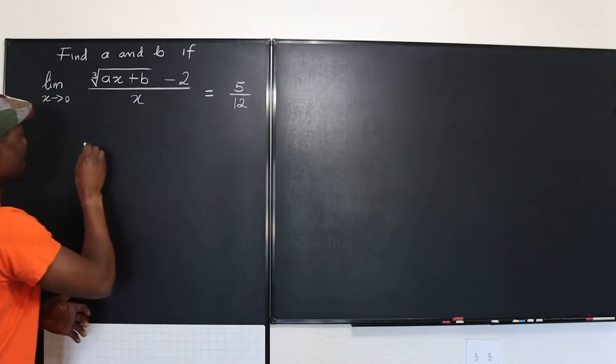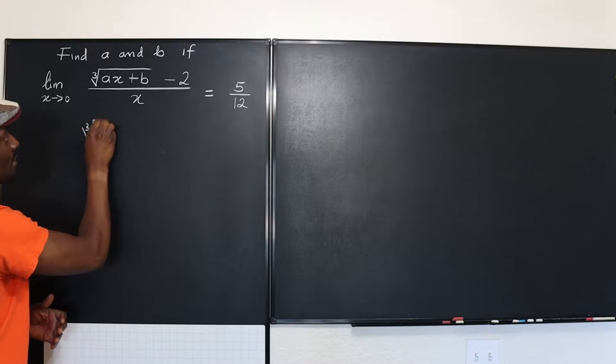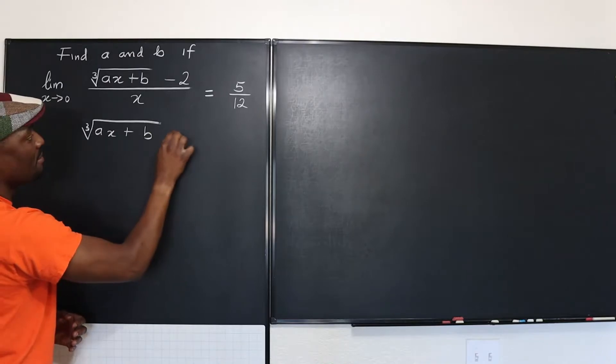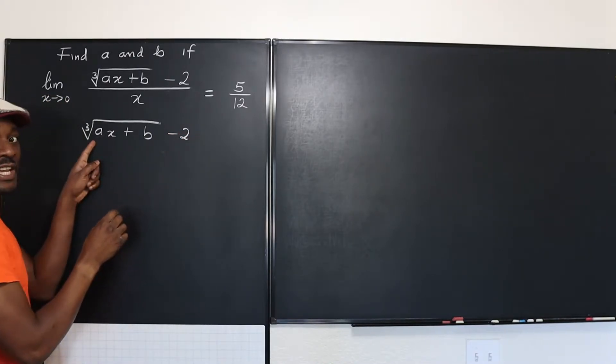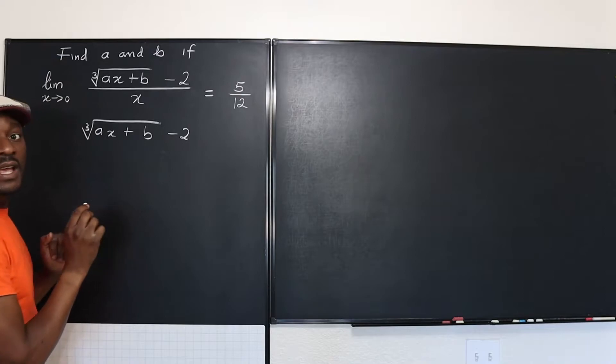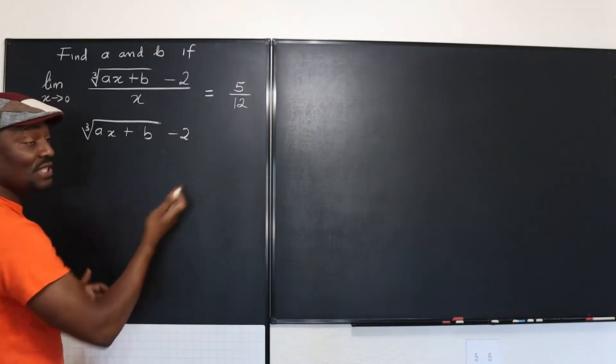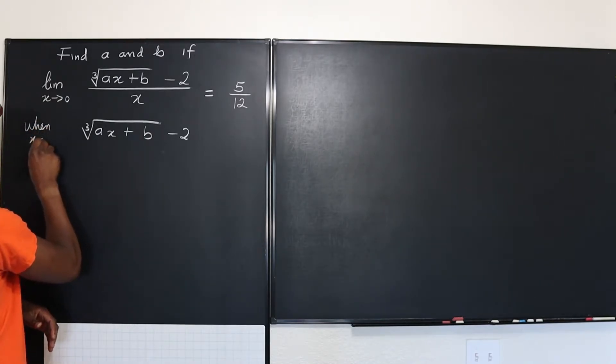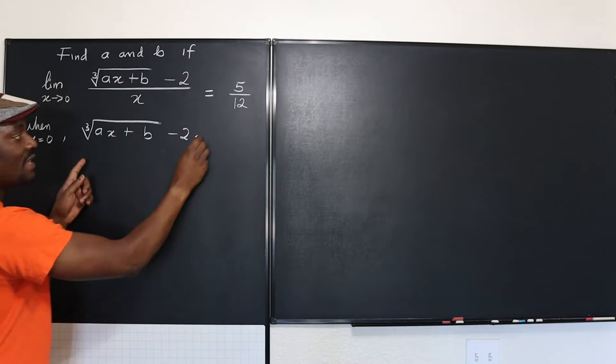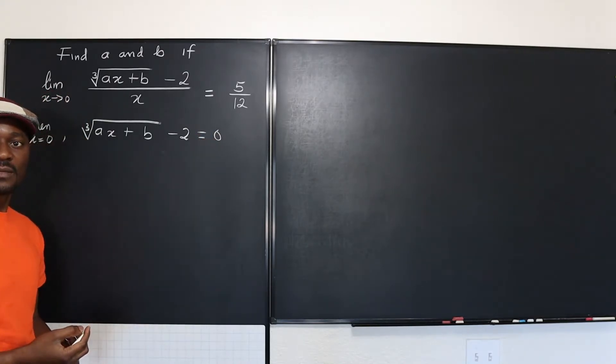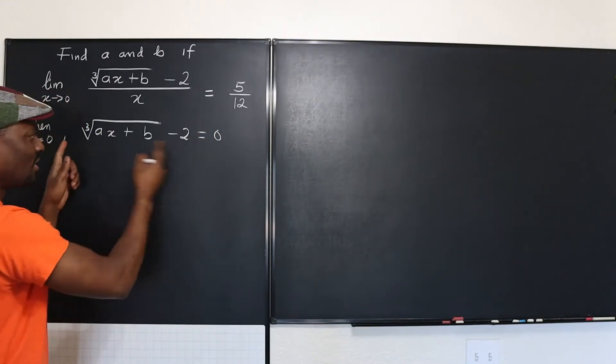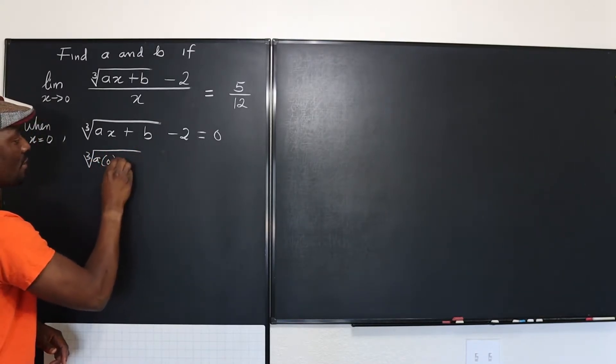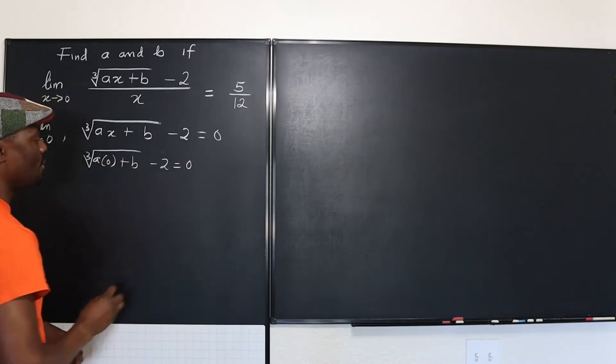So let's say that the cube root of AX plus B minus two, when you substitute zero to it will be, this is going to give you zero. When X equals zero, then this is going to give you zero. So let's try and see what we can do with this. So the cube root of A into zero plus B minus two equals zero.